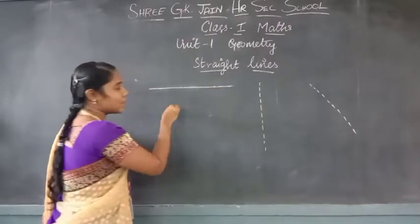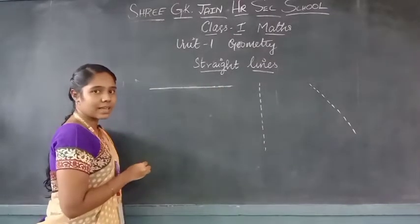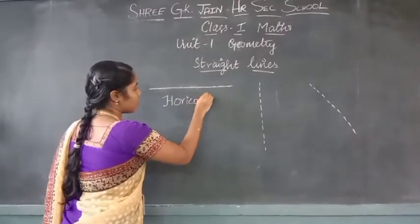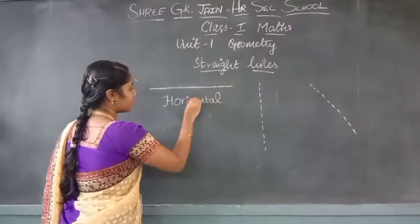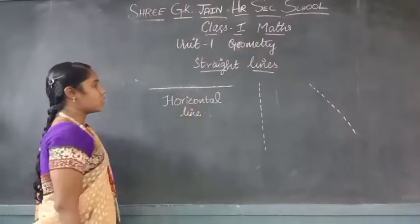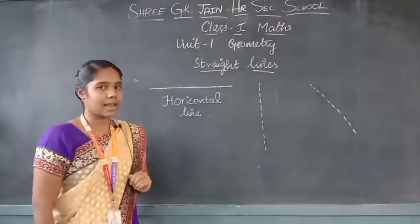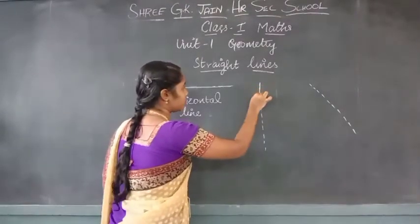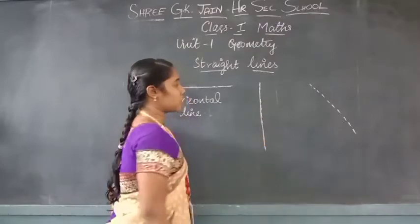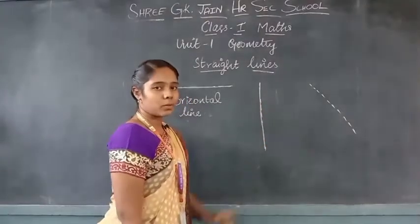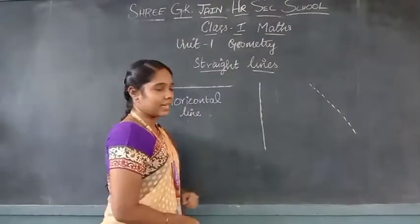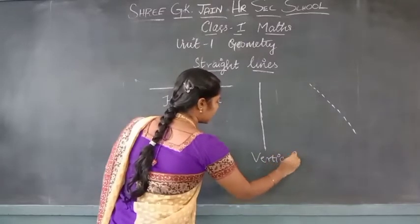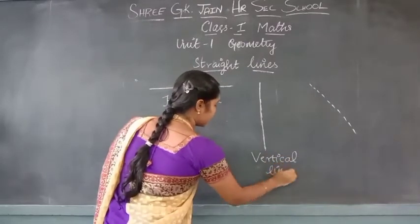I am going to join these dots along this side. What is the name of this line? Do you know the name of this line? This line is a horizontal line. H-O-R-I-Z-O-N-T-A-L. What is the name of this line? Horizontal line. Now let us join these dots to get another line. If the line goes from top to bottom, what is the name of that line? Vertical line — V-E-R-T-I-C-A-L. Vertical line.